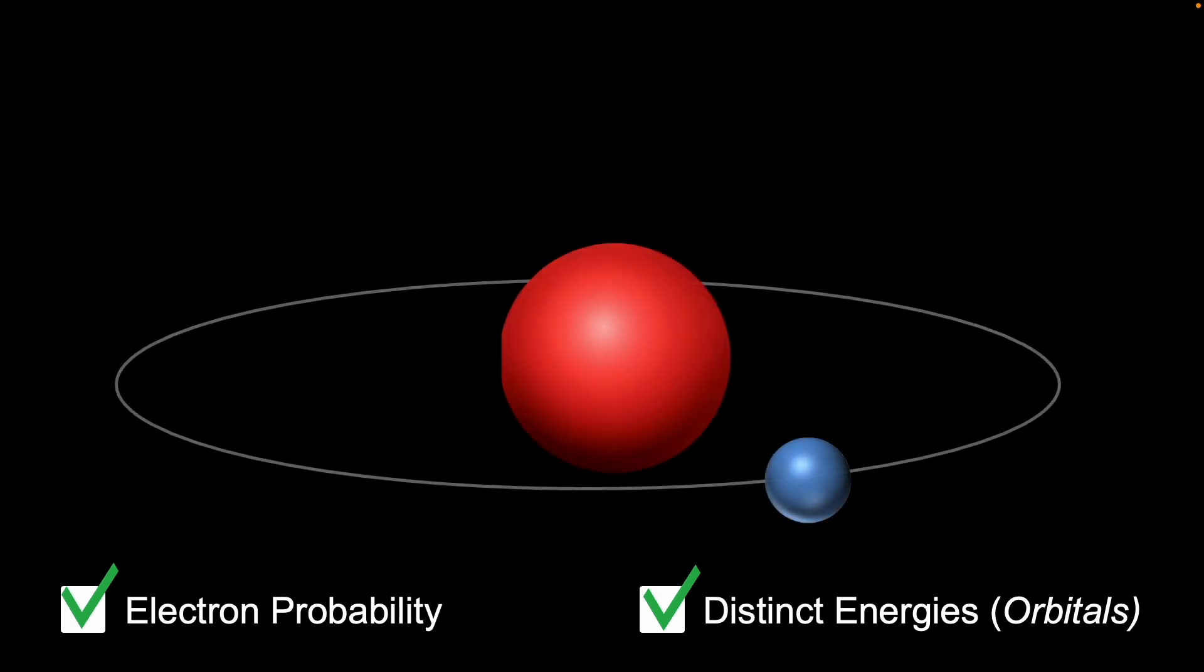Now imagine if Bohr had this critical information about the proton when he created his model. That it's a composite particle. That it is possibly a pentaquark with four quarks and one antiquark. How would models of the atom have evolved over the past century with this information?